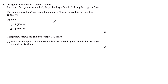Question 1. George throws a ball at a target 15 times. Each time George throws the ball, the probability of hitting the target is 0.48. The random variable X represents the number of times George hits the target in 15 throws. Part a: find (i) the probability that X equals 3, and (ii) the probability that X is greater than or equal to 5.